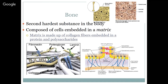So first of all, what do you need to know about bone? It is the second hardest substance in the body. The first hardest substance is the enamel of the tooth. The bone cells are composed of cells that are embedded in a matrix. The matrix is made up of collagen fibers embedded in protein and polysaccharides — so we've got collagen fibers, protein, and polysaccharides, which are sugar molecules all grouped together.